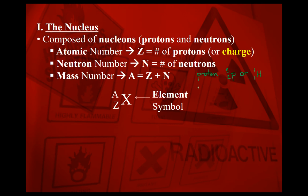A neutron uses element symbol lowercase n. A neutron has no charge and no protons, so the atomic number is zero. The mass number is protons plus neutrons — it's just one neutron, so that would simply be one. So a neutron is written as 1-0-n.